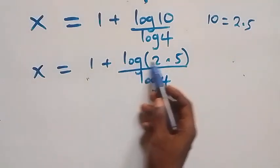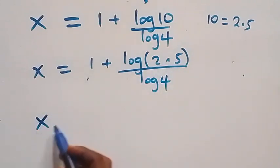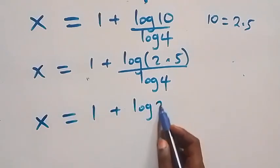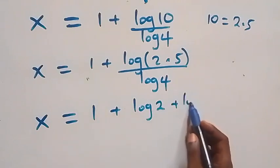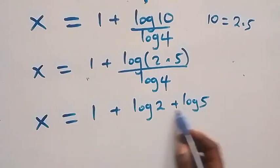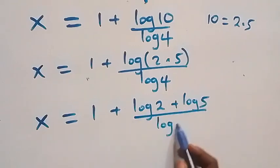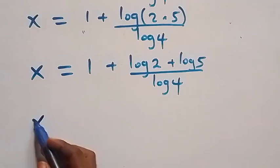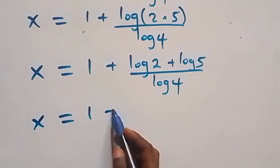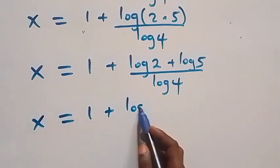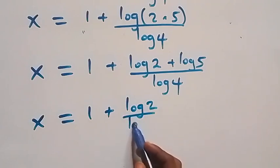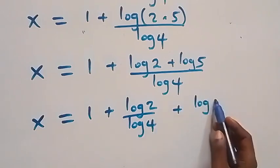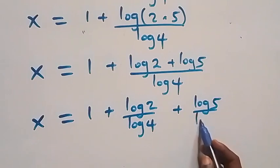Applying the product law of logarithm again, we write log(2 times 5) as log 2 plus log 5. Separating into two fractions gives x equals 1 plus log 2 over log 4, plus log 5 over log 4.